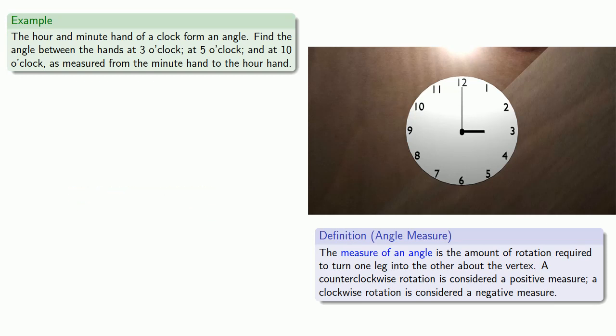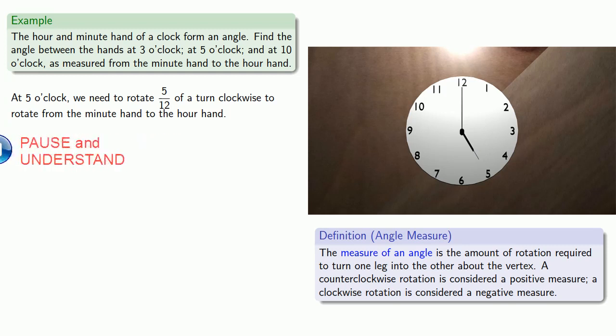What if we go to five o'clock? Maybe we can speed things up a bit. So let's rotate from the minute hand to the hour hand. And because the clock is divided into twelfths, we see that we need to rotate five twelfths of a turn clockwise to rotate from the minute hand to the hour hand. And since this was a clockwise rotation, the angle measure is negative. This means the angle is minus five twelfths of a turn.